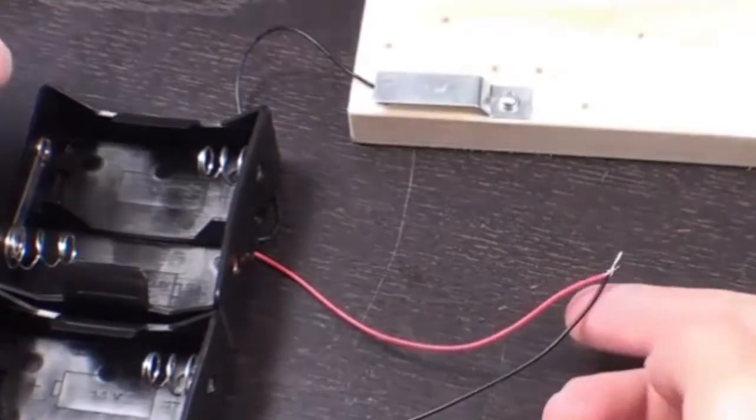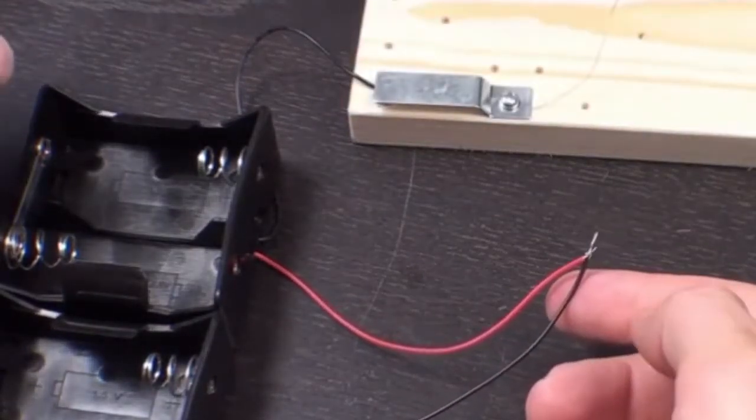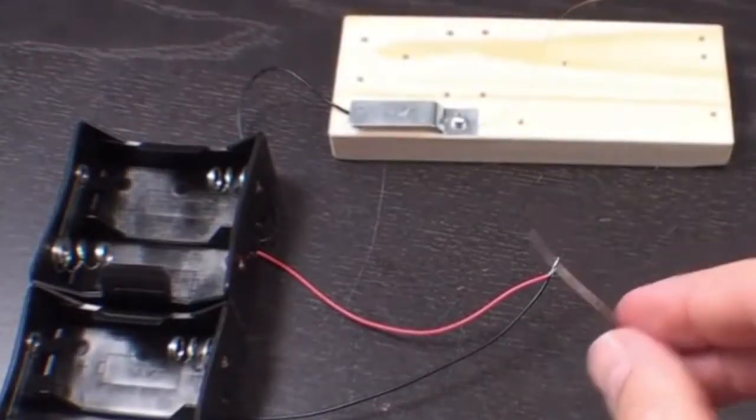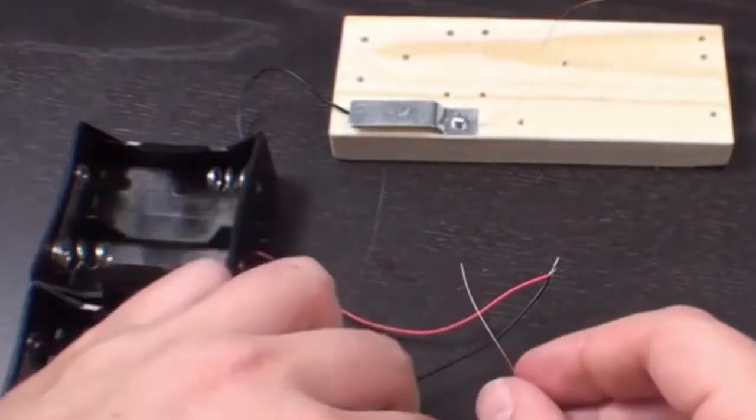Now connect the loose positive and negative leads from the battery packs together. Now connect the last positive lead from the battery pack to the open lead on the magnetic coil.